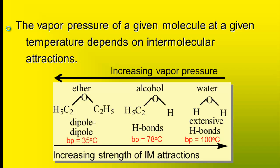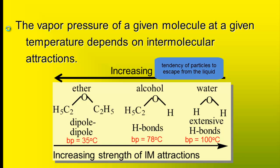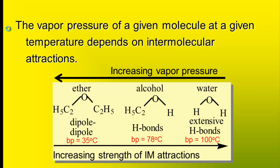The next slide relates vapor pressure to boiling point. In general, an increase in vapor pressure for a pure substance is associated with a lower boiling point. Ether has the highest vapor pressure among these three molecules and it has the lowest boiling point, while water has the highest boiling point and the lowest vapor pressure. Ether engages in only dipole-dipole interactions, alcohol engages in some hydrogen bonding, and water engages in only hydrogen bonding.